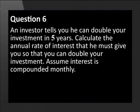An investor tells you that he can double your investment in five years. Calculate the annual rate of interest that he must give you so that you can double your investment. Assume interest is compounded monthly.